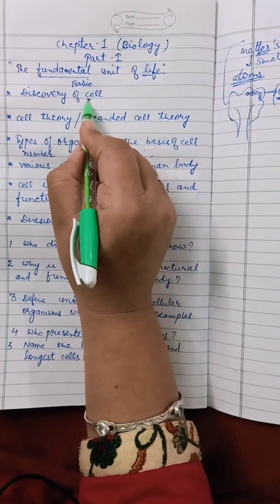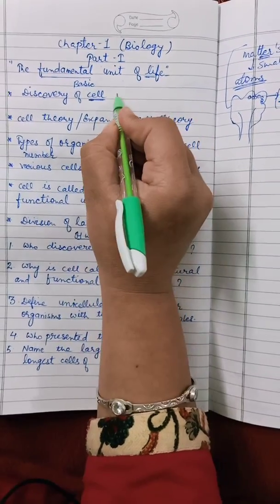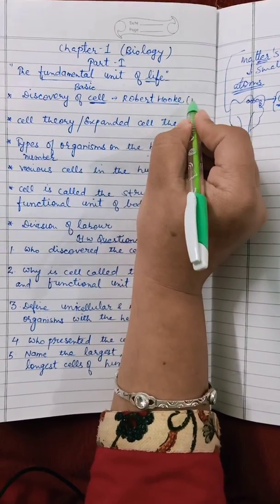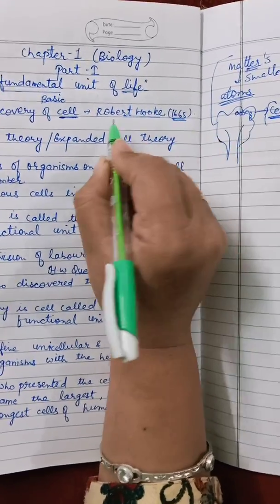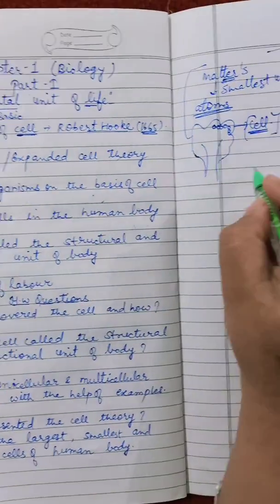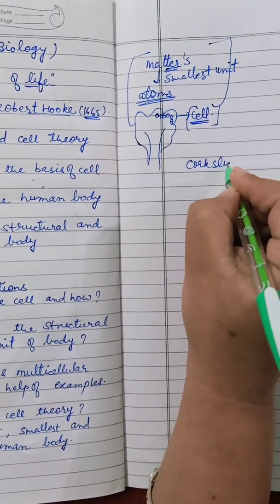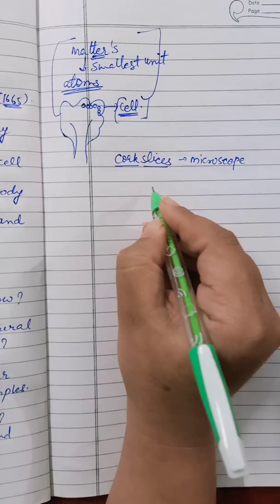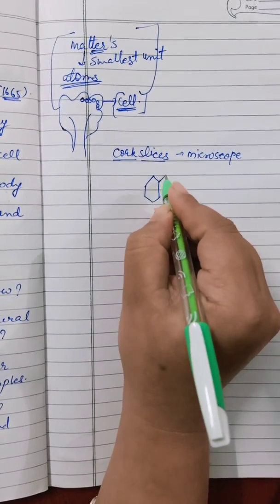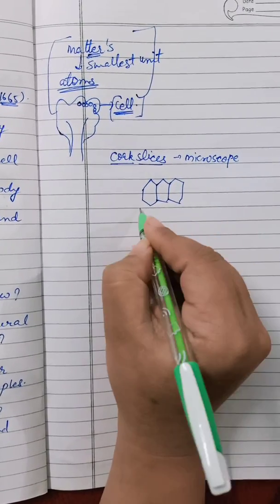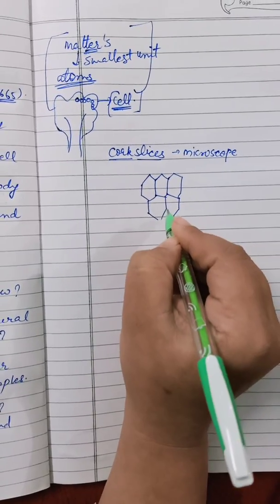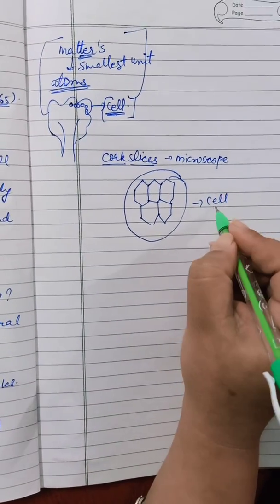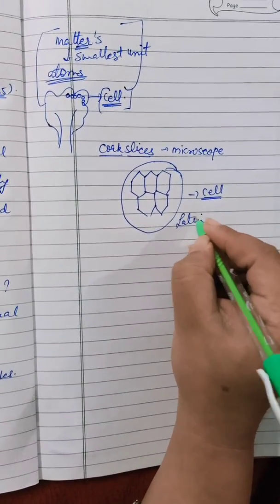Let us know about the discovery of cell. Cell was discovered by a scientist named Robert Hooke in 1665. Robert Hooke saw the cells in cork slices. When you see cork slices in a microscope, the structure was looking like a honeycomb, and small compartments were visible. He gave it the name cell. In Latin, cell means little room.